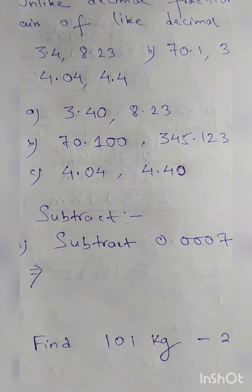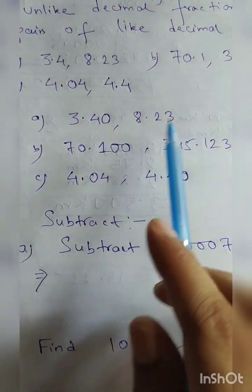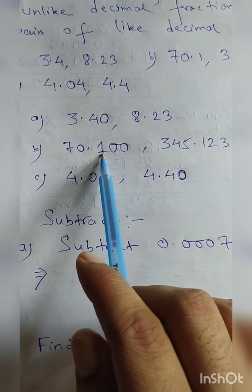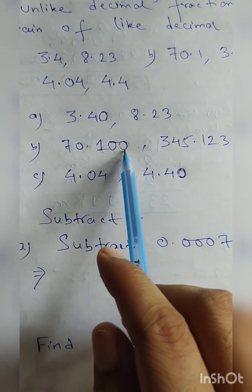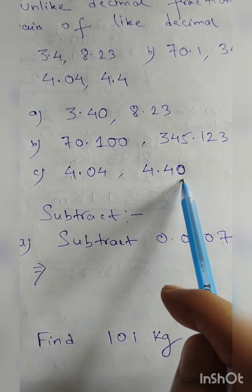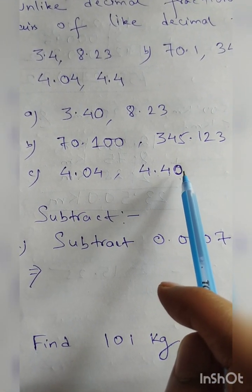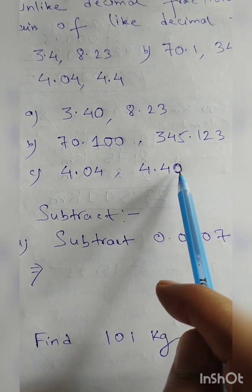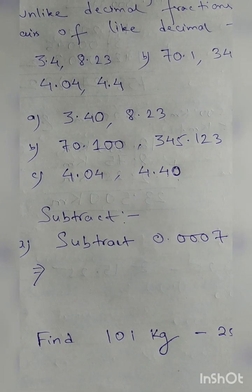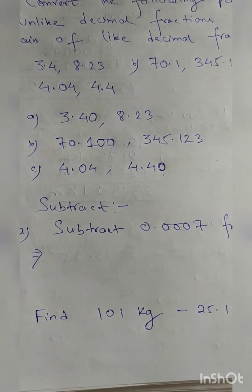So the only thing is that you have to put zeros. Here we put one zero; now it is like. Here after the decimal there are three digits so you put two zeros. Here after the decimal there are two digits so you put one zero extra. Always remember you have to put the zeros at the last — you cannot put the zero in the middle. At the last only you can put zeros. This is the way to convert unlike decimal fractions into like decimal fractions.